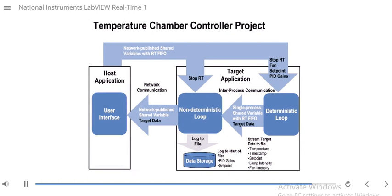Here we have our temperature chamber controller course project. In exercise 5.3 and 6.1, we started working on it. In 6.1 we worked on the deterministic piece, and in exercises 6.1 and 6.2 we'll finish the non-deterministic loop and create the host VI, using various methods for network communication. Go ahead and do exercises 6.1 and 6.2, or open the demonstration module where I walk through the solutions.